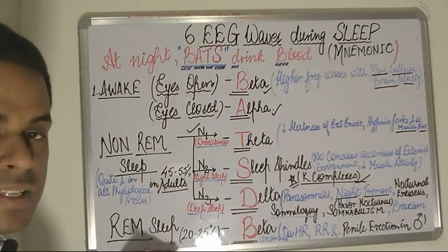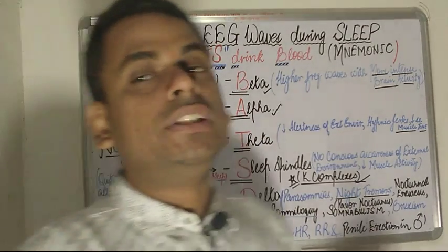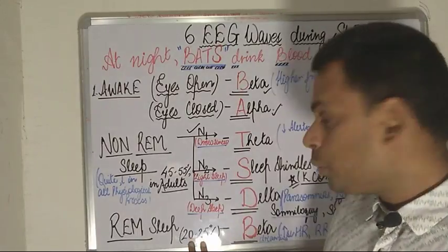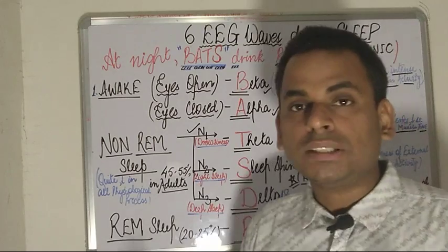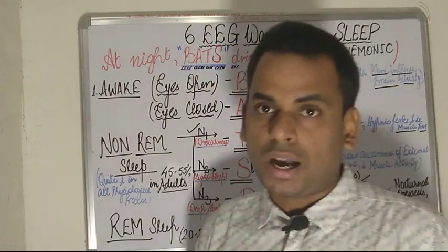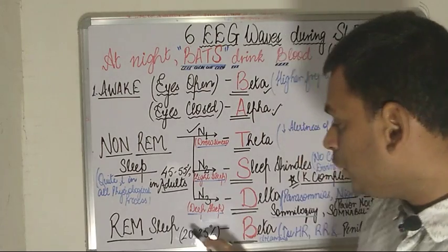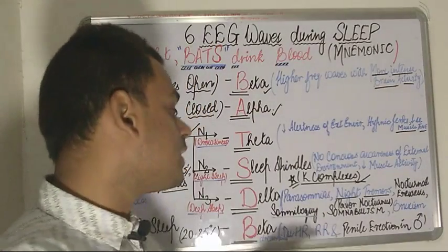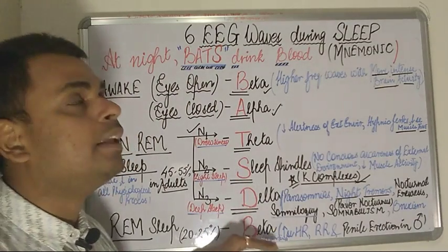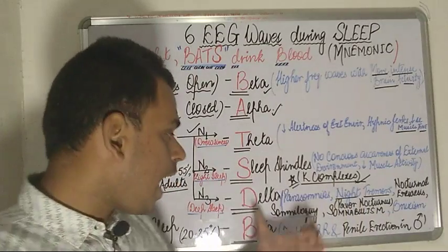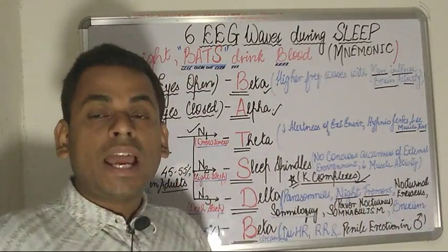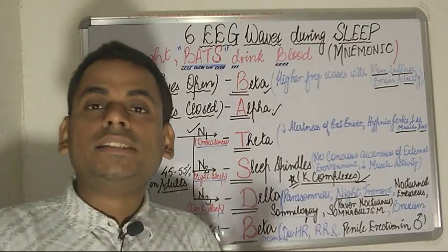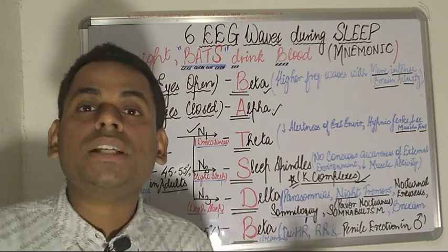Moving on to the next stage: REM sleep. REM sleep occurs during 20 to 25 percent of the total sleep cycle. The waves seen during REM sleep are again beta waves, which have the highest frequency. REM sleep — rapid eye movement sleep — is a stage of vivid and lucid dreaming.